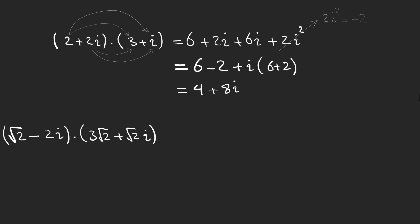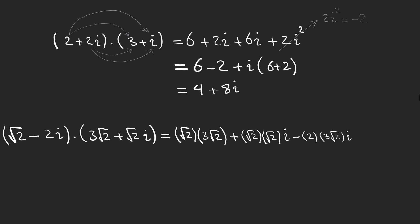Let's look at another example. Pay attention that we have four terms and we want to multiply each one by the others. We take the first term in the first parenthesis times the first term in the second parenthesis, and do the same for the other terms, giving us: six, two i, minus six root-two i, and two times the square root of two.